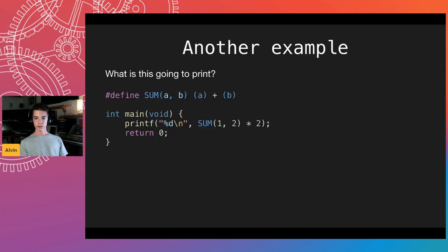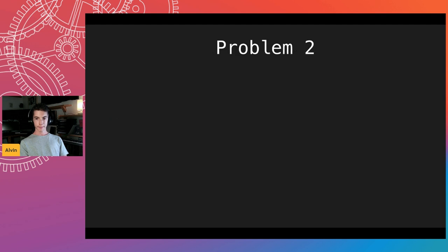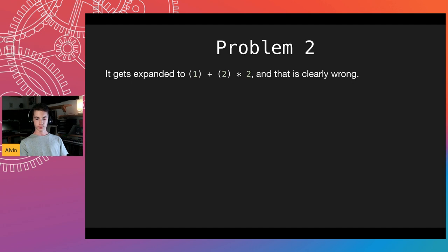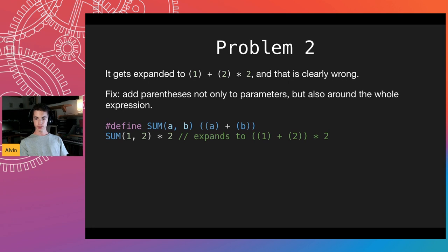Here's another example: a very simple macro called sum. The parentheses are placed correctly, but there's still a problem with this case — it gives the same issue as before: `1 + 2 * 2`, so it prints 5 instead of the correct 6. That's the second problem. We can apply the same fix — adding parentheses — and this works fine. This is what it expands to.